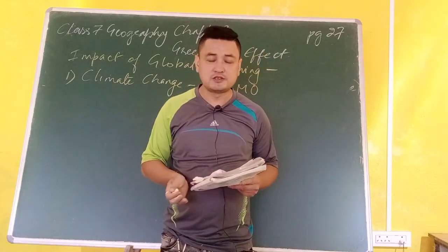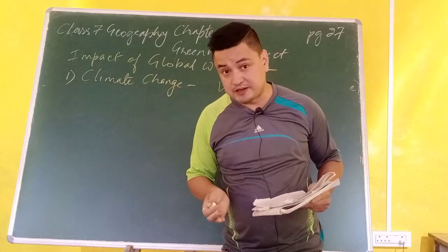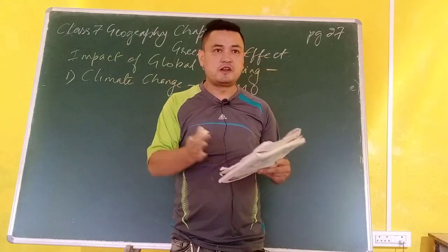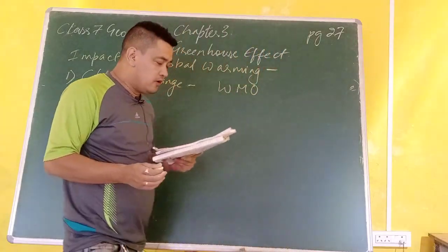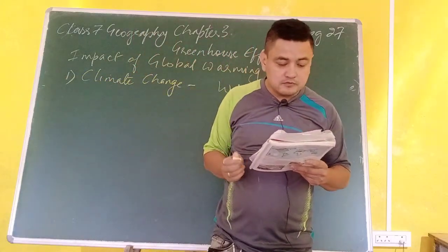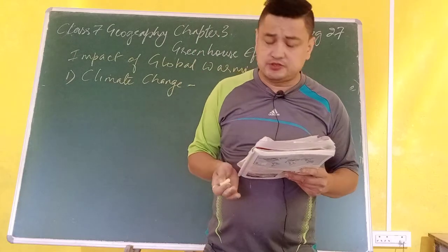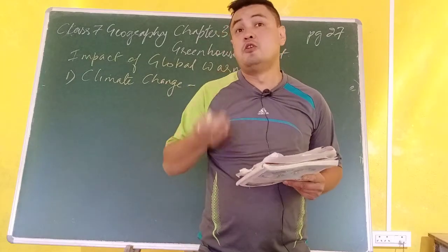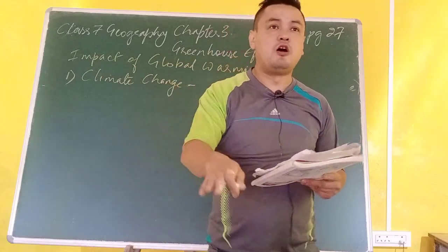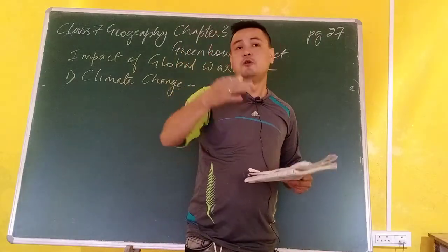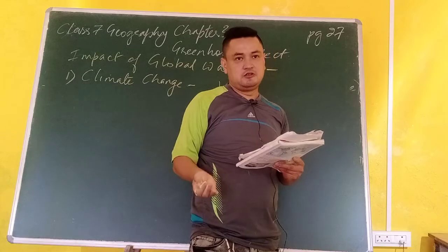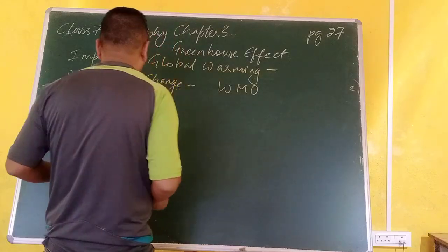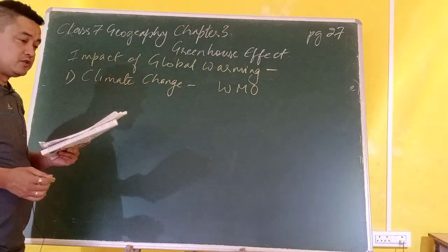Today morning it might be hot but in the evening it might be raining — that is weather. But climate means the same type of weather condition prevailing for a long period of time. The reason for climate change is an increase in the global surface temperature of the earth. We are talking about the earth's radiated heat, or terrestrial radiation, which causes global warming.